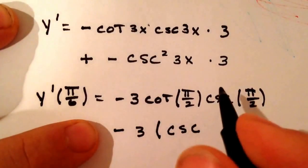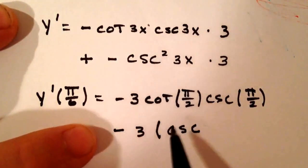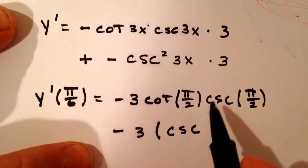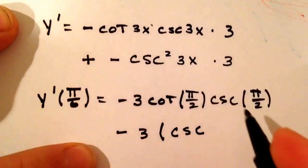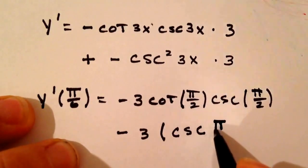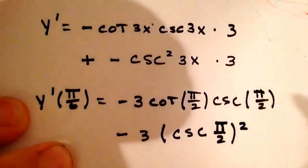I don't know if we're going to make it through this one. Come on girls, stick with me. Cosecant of 3 times π/6 again is going to give us π/2. And the whole thing is squared.